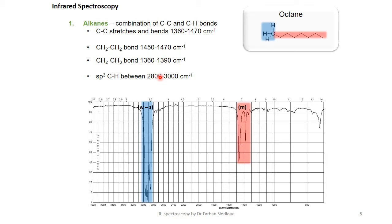Now we look at some group examples. The first one is alkanes. Here we have an example of octane, the long chain of CH2 groups shown after the fingerprint region. Also the CH3 group is in the 2900 to 3000 cm⁻¹ region. C-C stretch and bends at 1316 to 1470, CH2 bond 1450 to 1470 cm⁻¹, CH2 to CH3 bonds 1360 to 1390 cm⁻¹, sp³ C-H between 2800 to 3000 cm⁻¹.